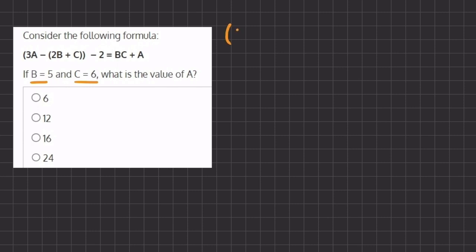So a is still our unknown value so I will keep writing 3a minus, we'll open our parentheses, 2b and instead of b I'm going to be writing 5 plus c which is 6.